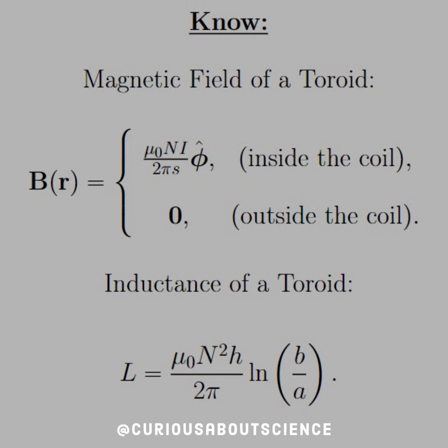What we found in an example in the book was that the inductance was L = μ₀N²H / (2π) · ln(B/A).